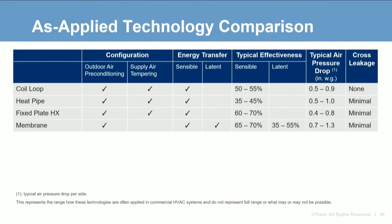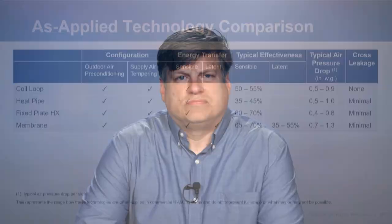Filling in the table for membrane exchangers: they have a sensible effectiveness similar to metal plate exchangers but for a little higher pressure drop, they also do latent recovery. Just remember this is as applied — membrane exchangers are typically applied at 30 to 40% lower face velocity than a metal plate exchanger.